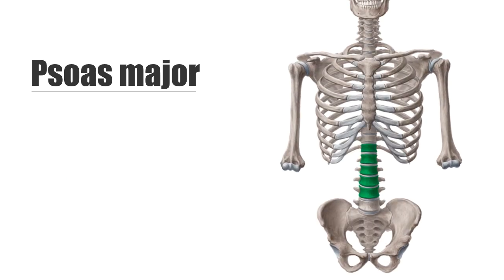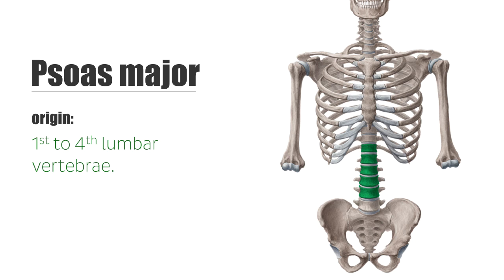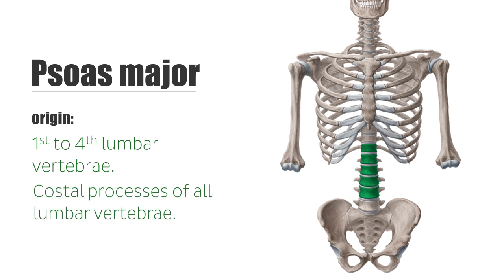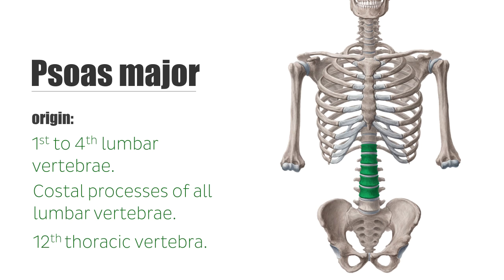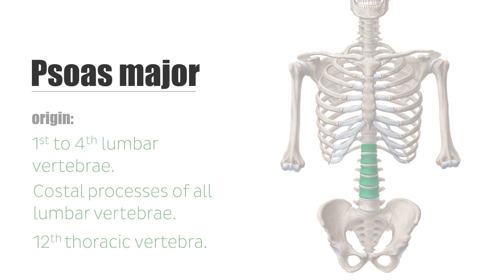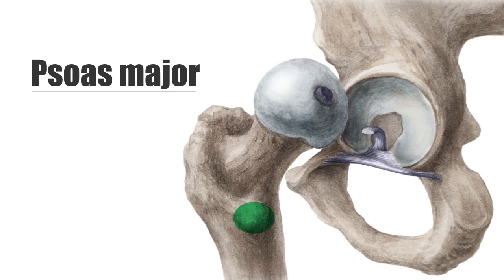The psoas major muscle originates from the 1st to 4th lumbar vertebrae, the costal processes of all lumbar vertebrae, and the 12th thoracic vertebrae, and inserts at the lesser trochanter of the femur.